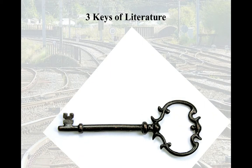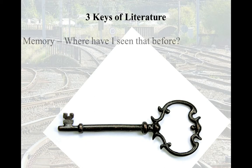So let's start off. First, as Foster points out, we have three keys of literature — things you can use to unlock meaning, to open up doors about what's going on. The first is memory. You want to ask the question: where have I seen that before? When dealing with memory, you always want to try to connect whatever you're reading with other things that you've read.